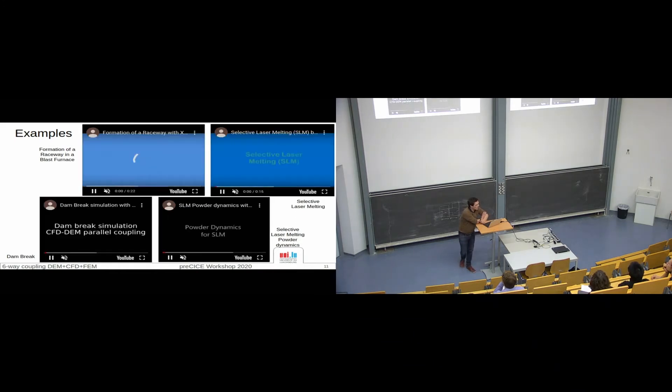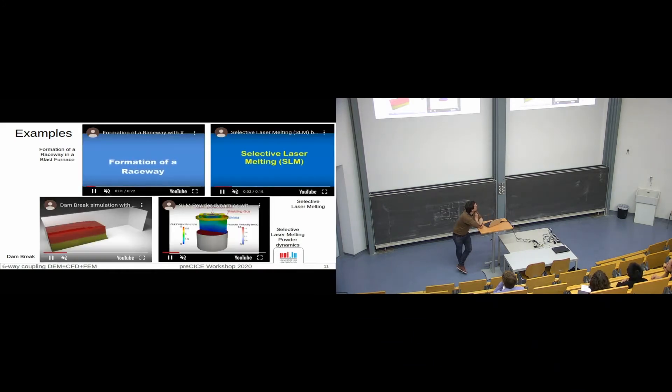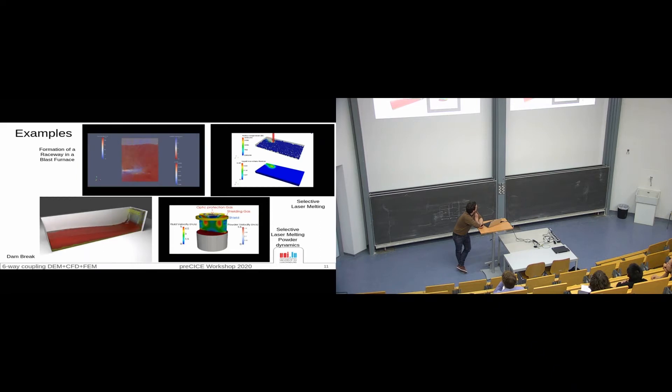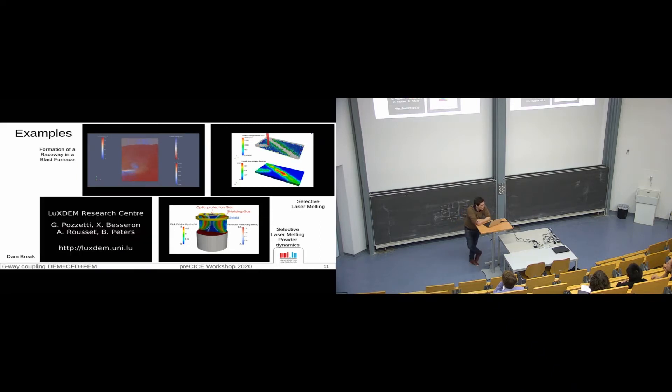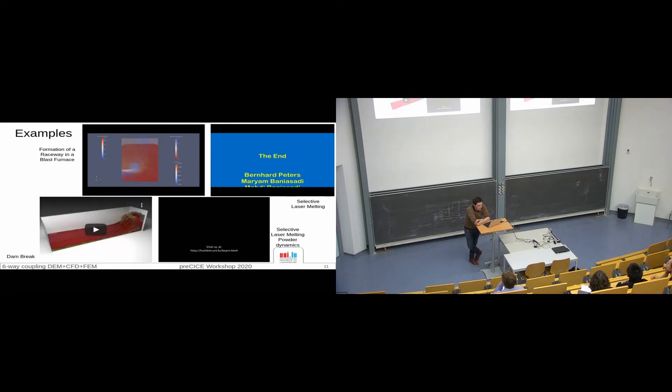Just some examples of what can be done with XDEM: dam breaks, formation of the raceway in a blast furnace for iron making, and selective laser melting with powders.